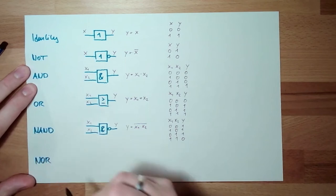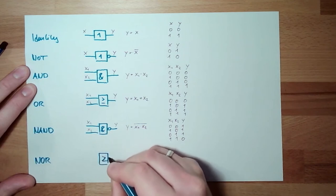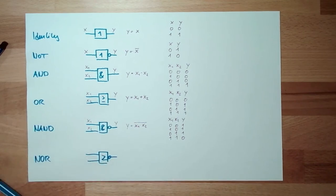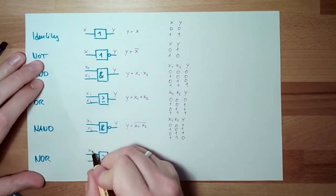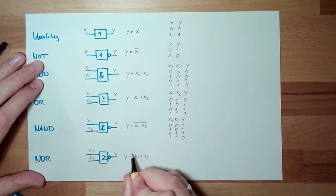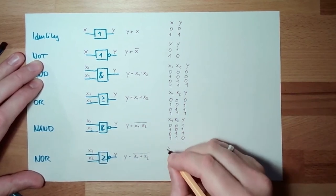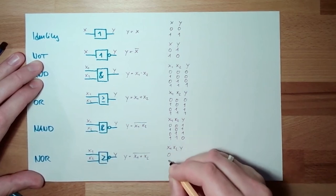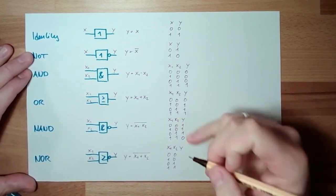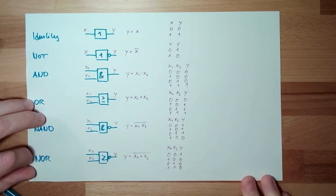Next is NOR. The symbol is the OR symbol with the small circle at the output. Inputs X1, X2, output Y. The equation is Y equals NOT(X1 OR X2), inverted. The table of truth: 0,0→1; 0,1→0; 1,0→0; 1,1→0. NOR is exactly the opposite of OR.